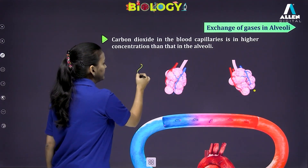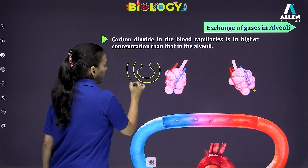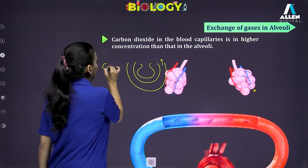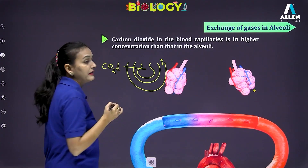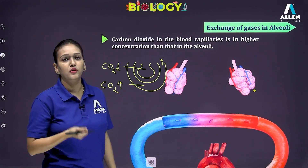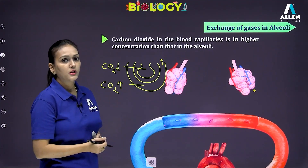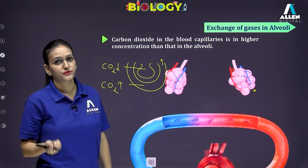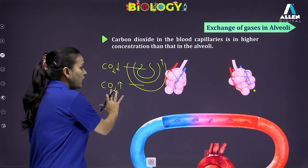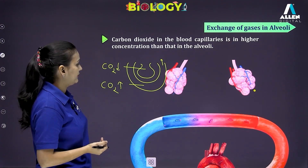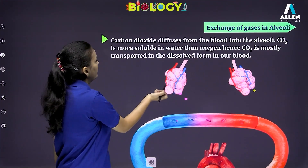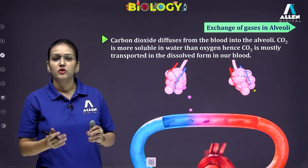Looking at the same diagram of the alveoli and their blood supply: the alveolar air — the air you inhaled — has less CO2, so CO2 is low in alveolar air. But CO2 is high in the blood because CO2 produced at the level of body cells is transported into the blood. Since blood has higher concentration of CO2 and alveolar air has lower concentration, CO2 diffuses from the blood into the alveolar air.